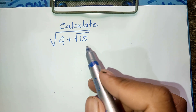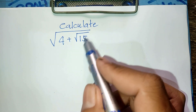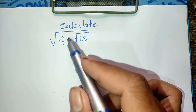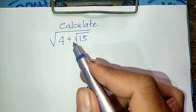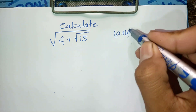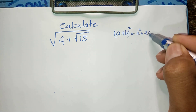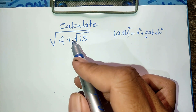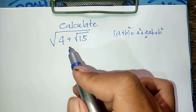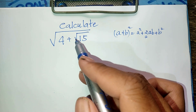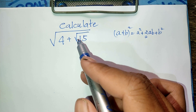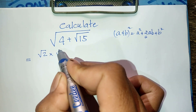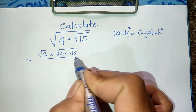For square root of 4 plus square root of 15, we need to write this as the square of something so we can simplify the root. To write it as a square, we use the rule (a + b)² = a² + 2ab + b². Since we need a factor of 2, I multiply by square root of 2 and divide by square root of 2. Now I get square root of 2 times (square root of 4 plus square root of 15), divided by square root of 2.